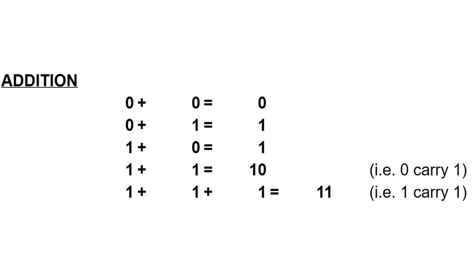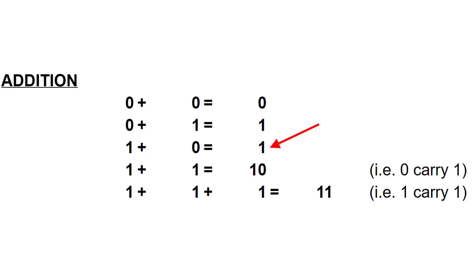So first of all, a few rules. When you add a zero and a zero, the answer, as you'd expect, is a zero. When you add a zero and a one, the answer is a one. And when you add a one and a zero, the answer is a one. That's all pretty simple. But if you add a one and a one, you actually get the answer one zero — which is two in decimal — which really means it's zero, carry one to the next column, exactly as we would do in decimal mathematics.